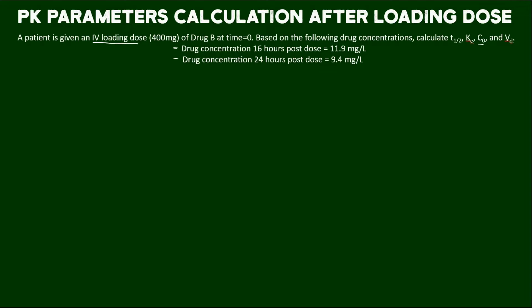With half-life, this is a very common calculation, and that calculation looks like 0.693 over the elimination rate constant. I know what you're saying, we don't have the elimination rate constant. So let's go calculate that first, and then we'll finish this half-life.